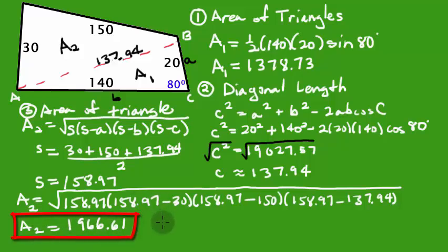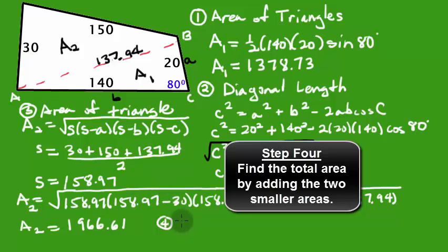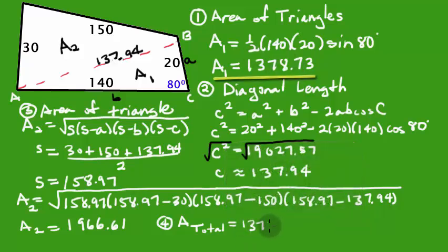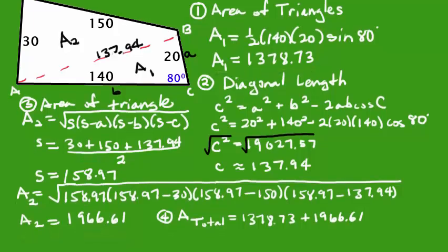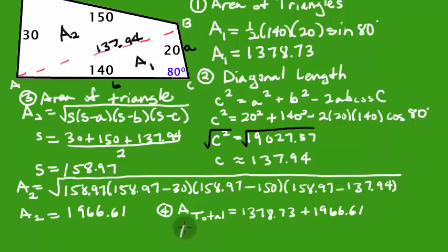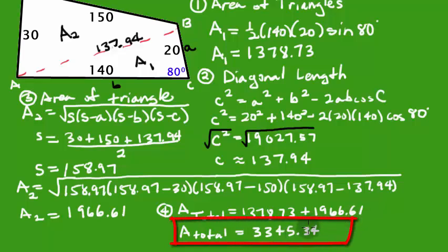The fourth and final step is to calculate the total area by summing the two smaller areas. Total Area = Area 1 + Area 2 = 1378.73 + 1966.61 = 3345.34 square units. If the units were feet, this would be square feet; if meters, square meters.